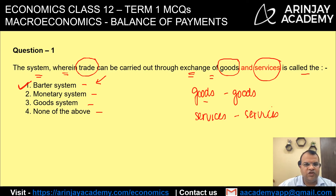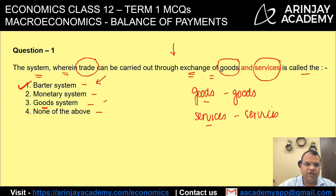In a monetary system, there could be an exchange of goods for money or services for money — money is involved. As for 'goods system,' from this question's perspective, there is nothing like a goods system, so that option is obsolete. Since option 1 is the correct answer, option 4 — none of the above — cannot be the answer.